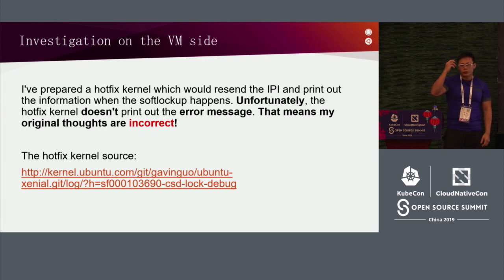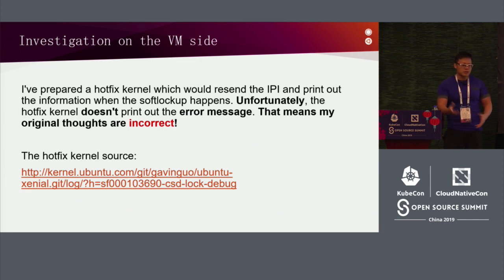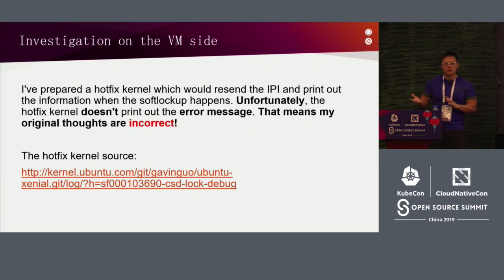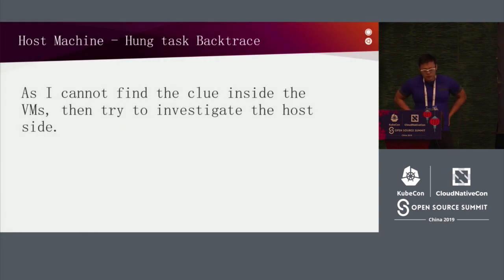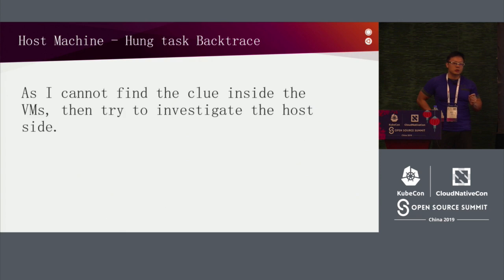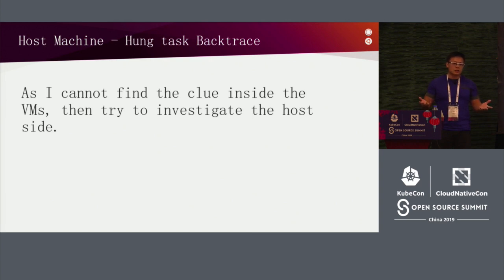When you find IPI missing, you need to reflect — the probability of IPI missing is that low, so why do I have this problem? Maybe I'm wrong. I shouldn't look at the VM, I should look at the host. The client doesn't always provide very detailed information — some of what they tell us is not accurate. You have to analyze yourself whether it's true or not.